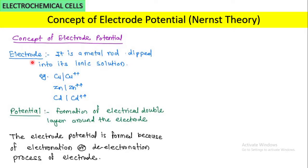What is the potential? It is nothing but the formation of an electrical double layer around the electrode. We will see this in detail shortly. So potential is nothing but the formation of the electrical double layer.